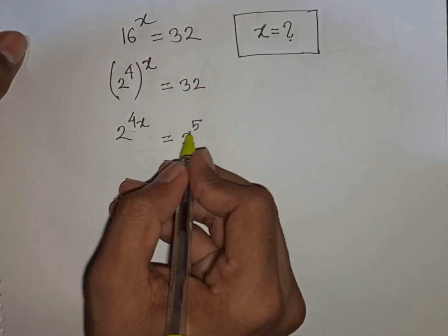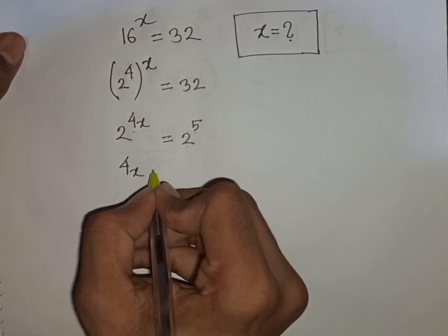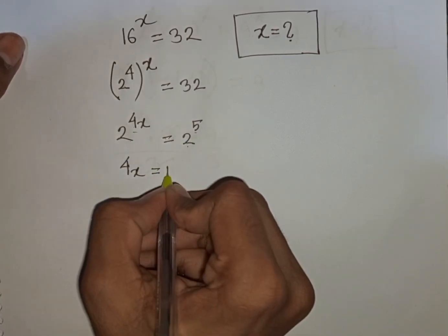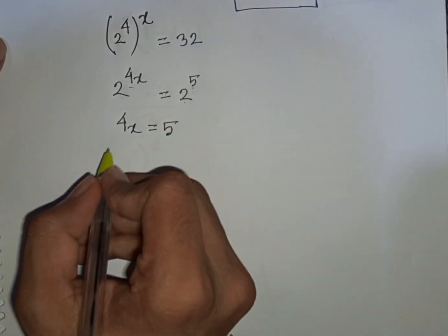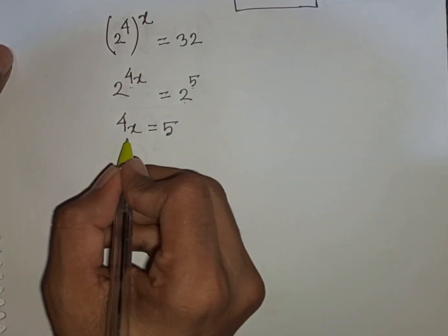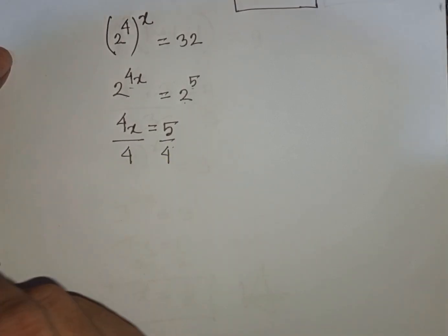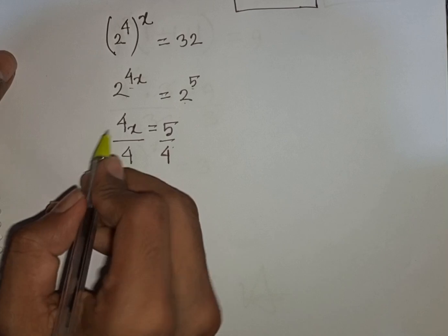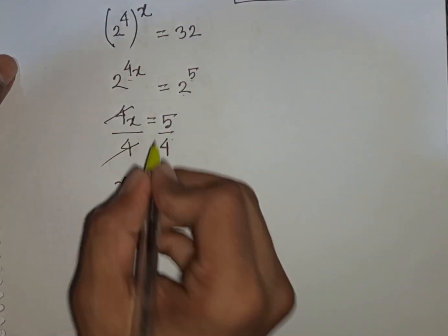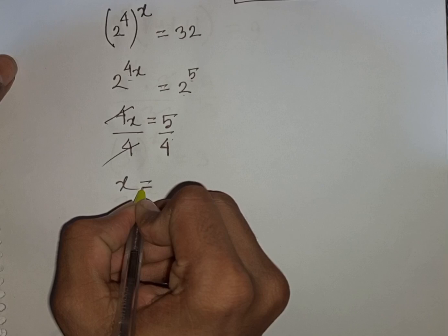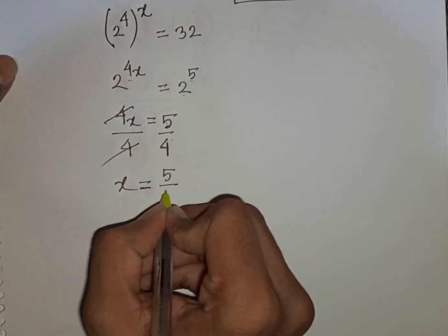We see that both sides have base 2 — same base — so the 2s will be cancelled and the powers will be equal. So we can write 4x is equal to 5. Now we divide both sides by 4 because we need the value of x. This 4 and 4 will be cancelled, so x is equal to 5 over 4.